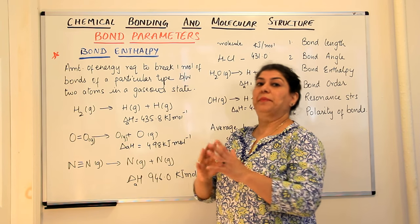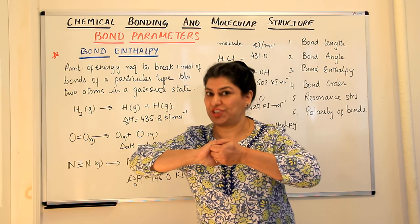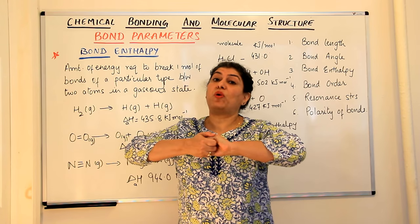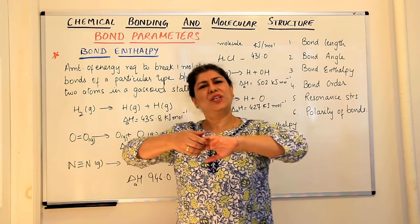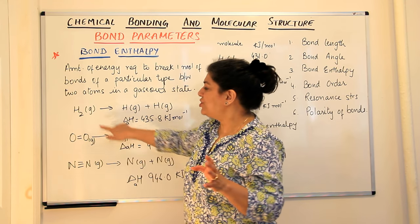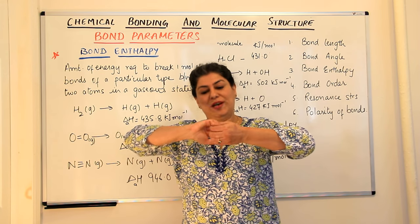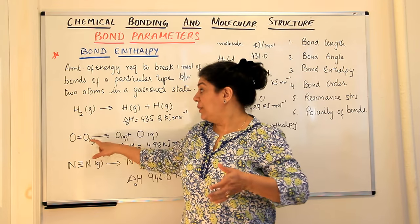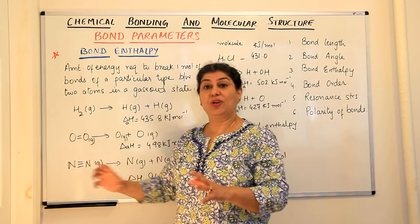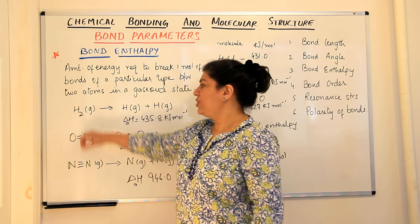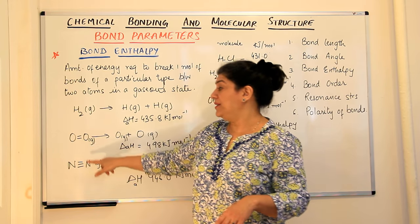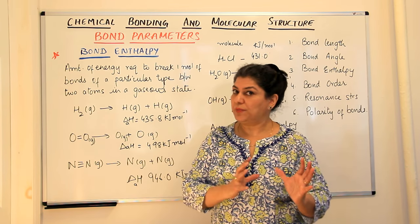Bond enthalpy can be more or less depending on the strength of the bond. If a bond is stronger, breaking it requires much more energy. If a bond is weak, you need only a little energy. A single bond is one overlap with one pair of electrons shared; a double bond is two pairs; a triple bond is even stronger. So a double bond should be stronger than a single bond, and triple stronger than double. But it also depends on the atoms involved — we'll come to that part later.